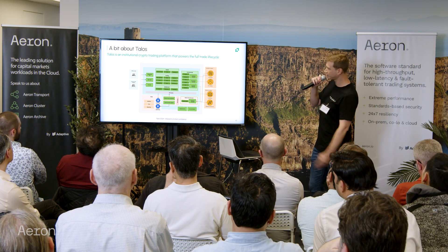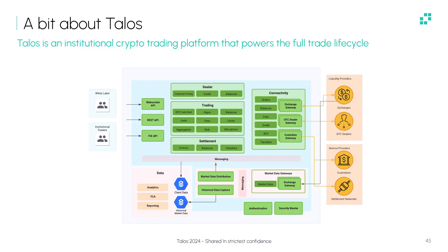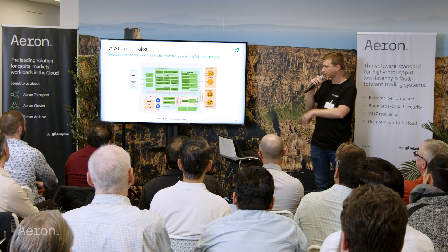We have a three-tier architecture where on the right-hand side we connect out to about 60-odd providers in the crypto ecosystem. On the left-hand side is where our clients connect in via our APIs — we support a bunch of APIs and have a normalized view of the entire ecosystem. In the middle we have all of our business logic: smart order routing, trading algorithms, positions, and risk. Some of our clients are on the buy side using our trading algorithms; some are on the sell side building a crypto brokerage, trading with their clients and hedging with the street.